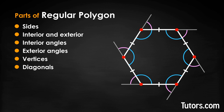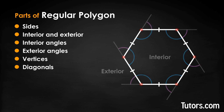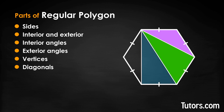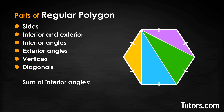Where sides meet they form vertices, so our hexagon has six vertices. Inside the sides where the interior angles are is the hexagon's interior; outside its sides is the exterior. Regular polygons can also make diagonals — connect any non-adjacent vertices in the interior to make diagonals. All simple polygons can be divided into triangles using diagonals. Drawing three diagonals in our hexagon creates a minimum of four triangles. Each triangle has interior angles adding to 180 degrees, so the sum of the interior angles of a regular hexagon is 4 × 180° = 720 degrees.